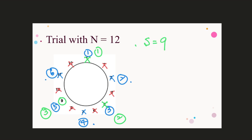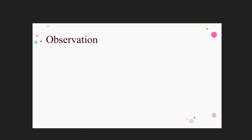You may pause the video again and cross the numbers on your own to get a better understanding. You may also try with another value of N. You may notice that when there are even numbers in the circle, the numbers in the even positions are crossed out. When there are odd numbers in the circle, the pattern is not clear.